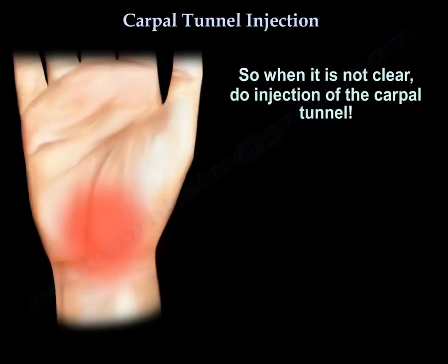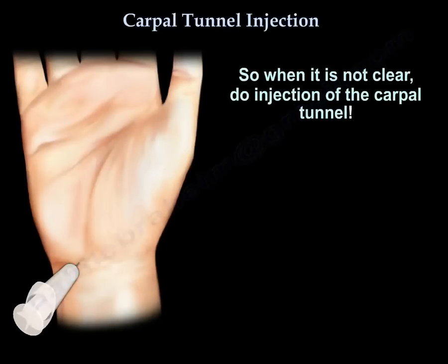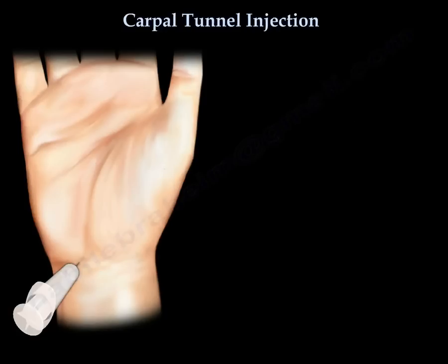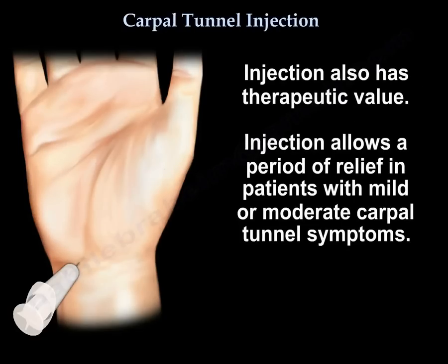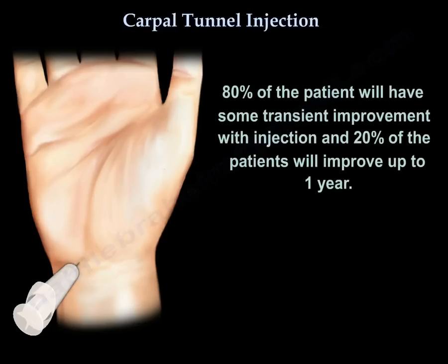So when it is not clear, do an injection of the carpal tunnel. The injection also has therapeutic value — it allows a period of relief in patients with mild or moderate carpal tunnel symptoms. 80% of patients have some transient improvement, and 20% improve up to one year.